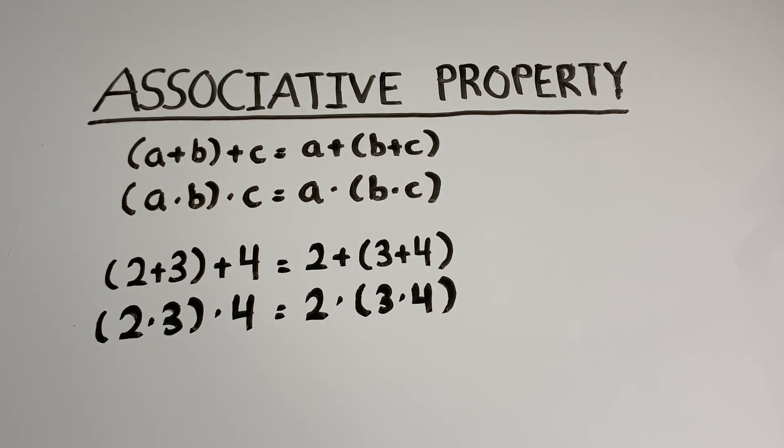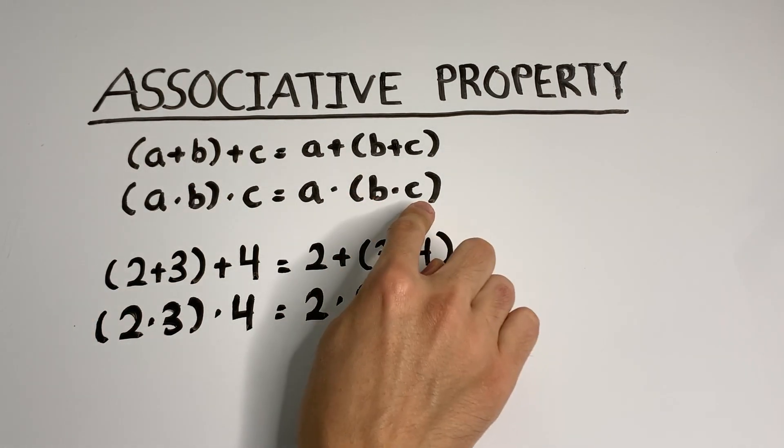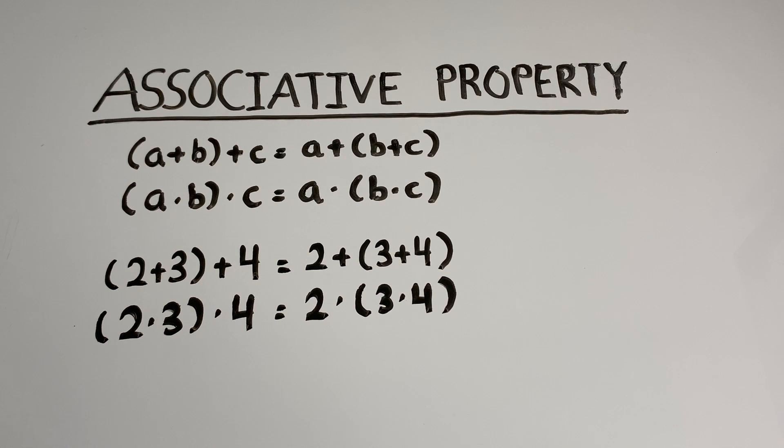Similarly, for multiplication, it doesn't matter if we multiply a and b together first and then c afterwards, or b and c together first and then a afterwards. The answer will be the same. With 2, 3, and 4, we can see 2 times 3, which is 6, times 4 equals 24. That's the same as 3 times 4, which is 12, times 2, which is 24.